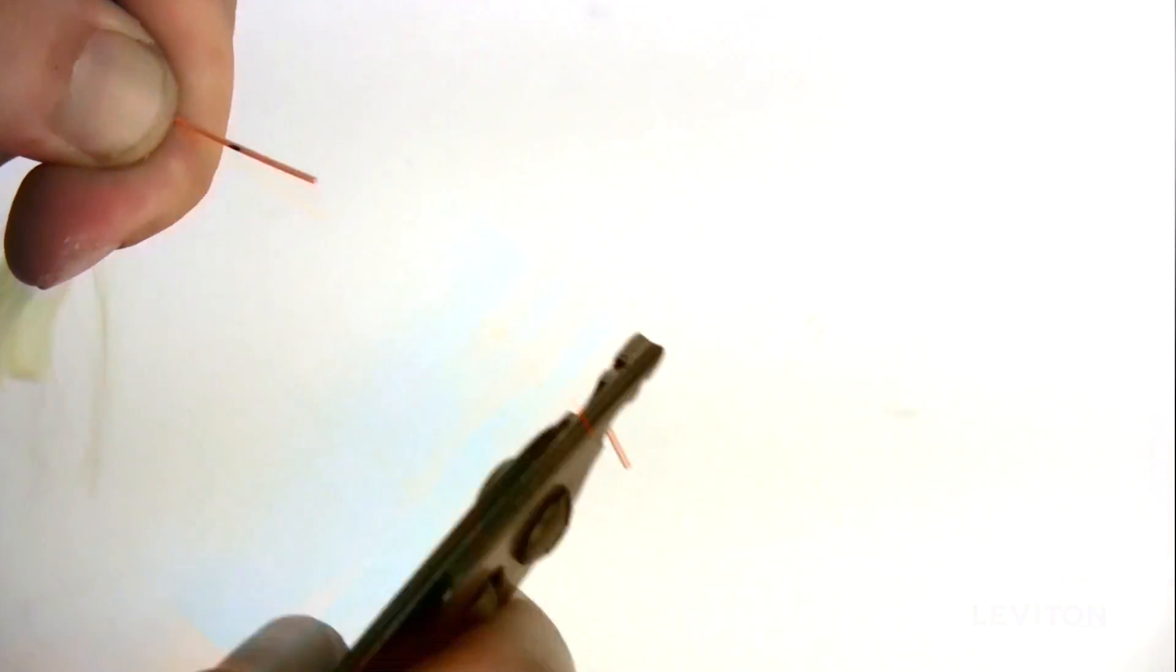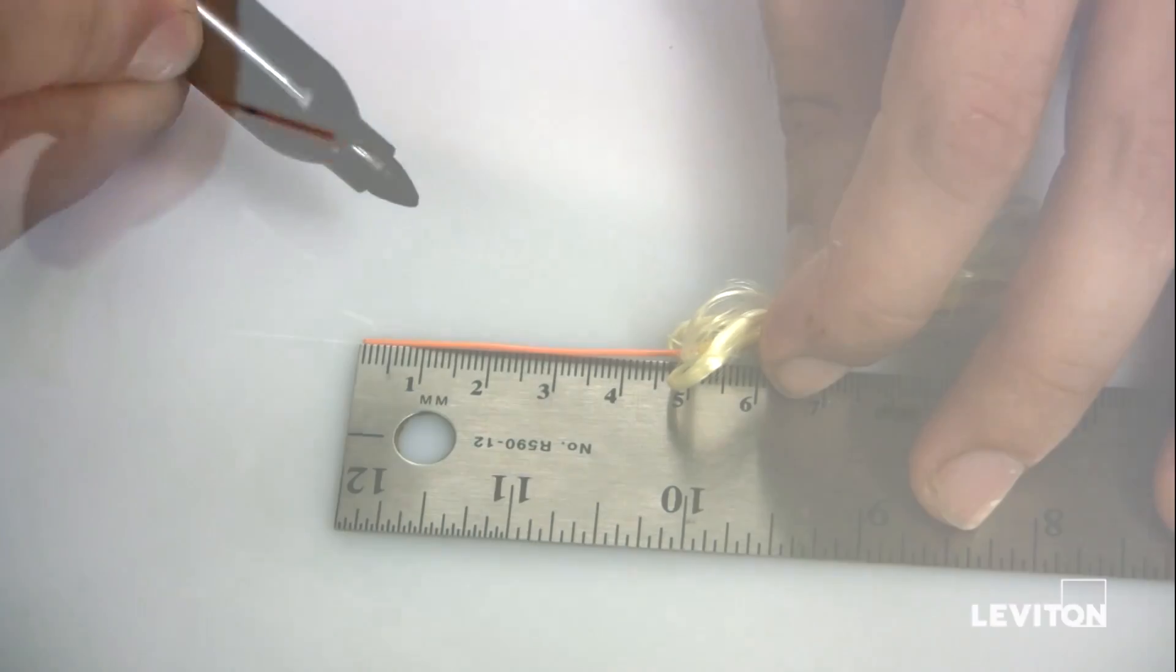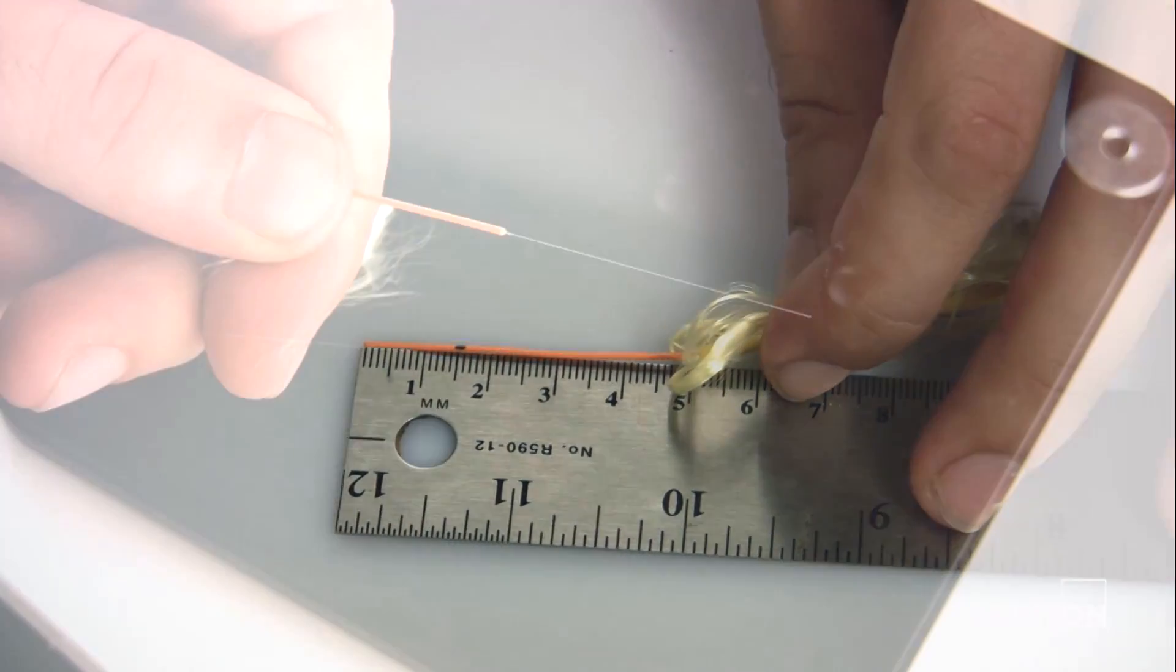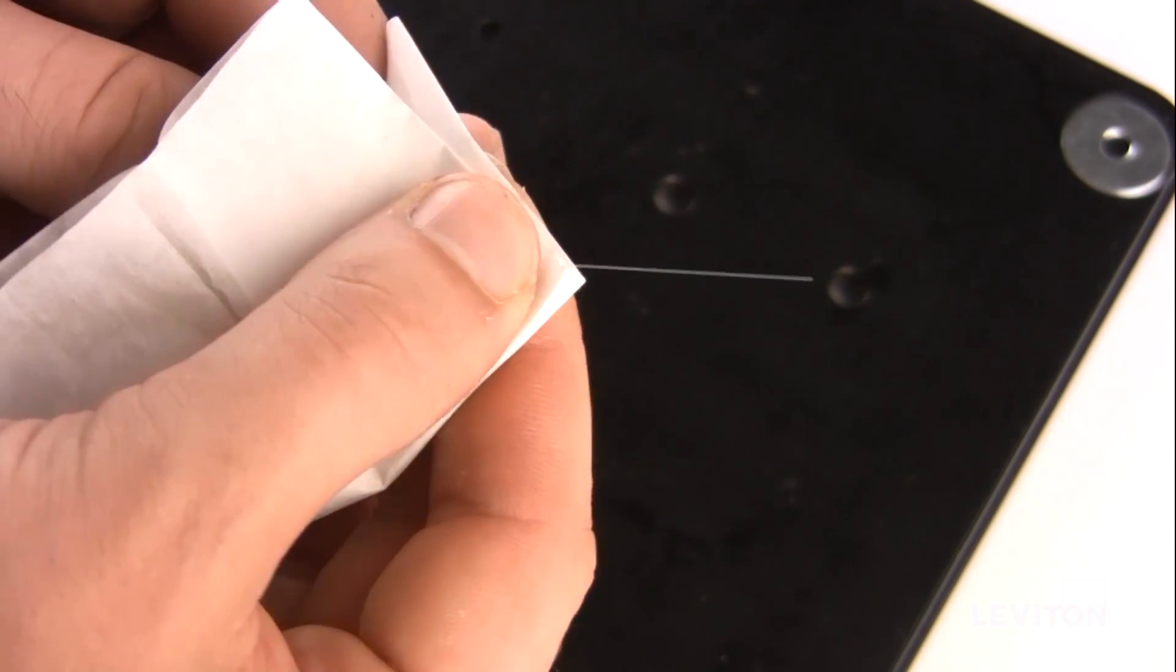Then, strip the fiber to a length of 40 millimeters by removing 10 millimeters at a time. From the end of the fiber, place a mark at 15.5 millimeters. Clean the stripped fiber with an alcohol wipe.